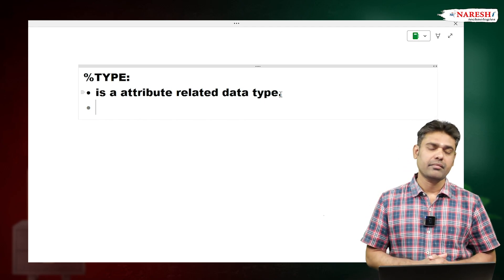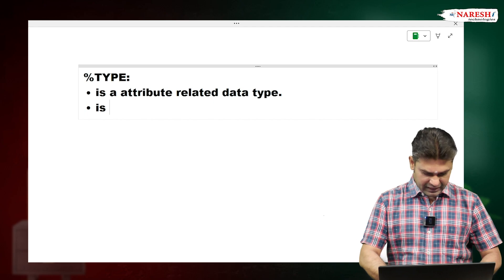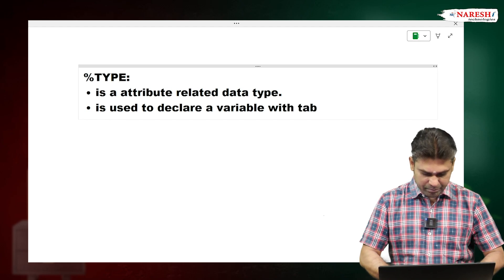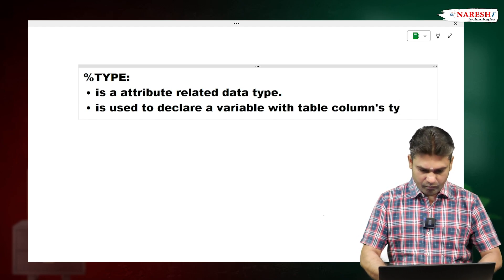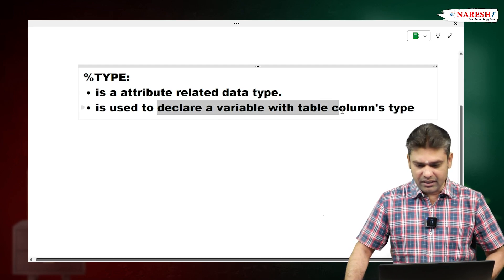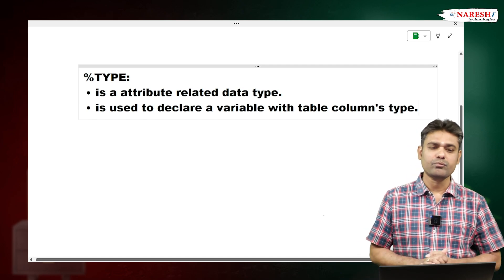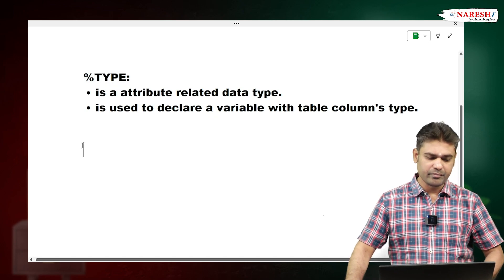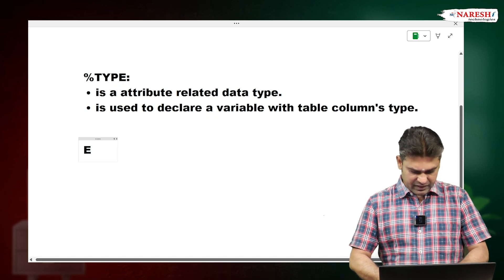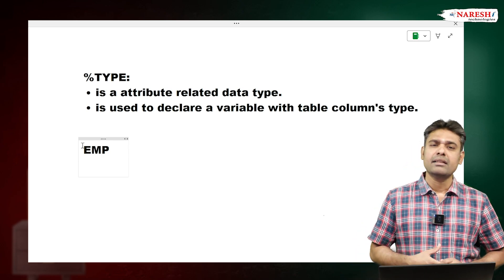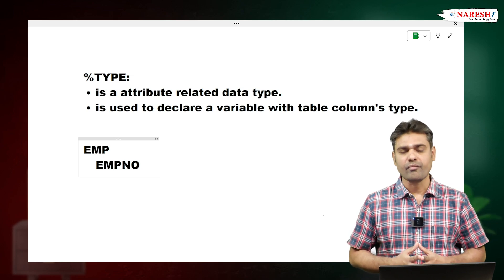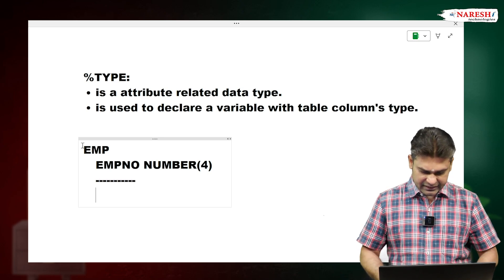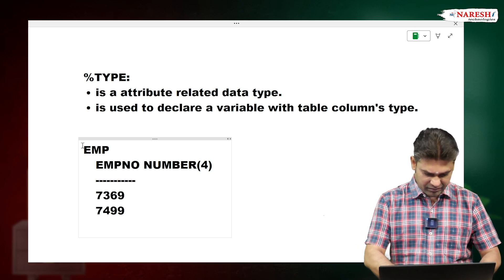Then why do we use this? This data type is used to declare a variable with a table column's data type. If you want to declare a variable with a table column's data type, we use %TYPE. For example, there is the EMP table. This EMP table has an employee number column, declared as NUMBER(4), with values like 7369, 7499, 7521, etc.